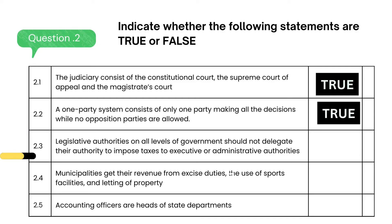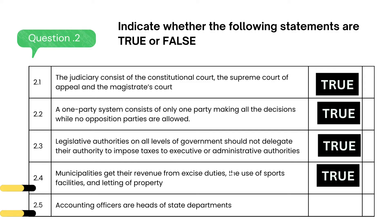Legislative authorities on all levels of government should not delegate their authority to impose taxes to executive or administrative authorities — the answer is true. Municipalities get their revenue from excise duties, the use of sports facilities, and letting of property — the answer is true. Accounting officers are heads of state departments — the answer is true.